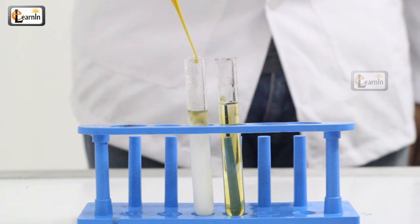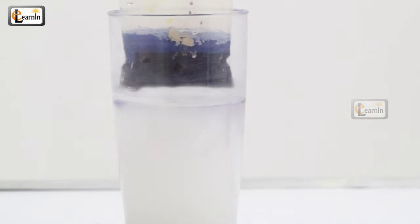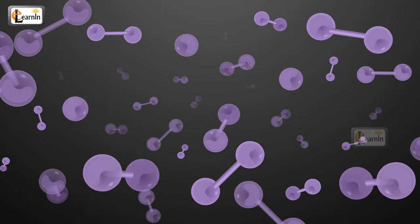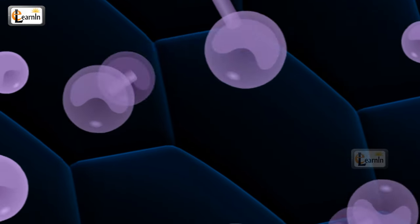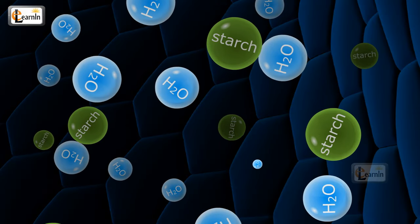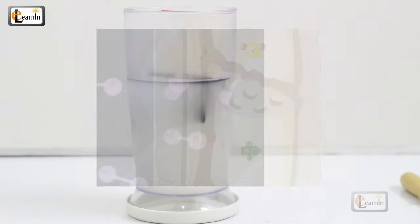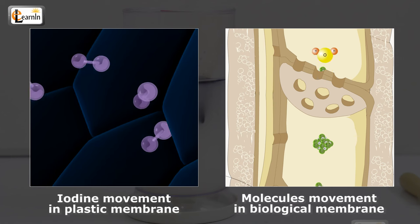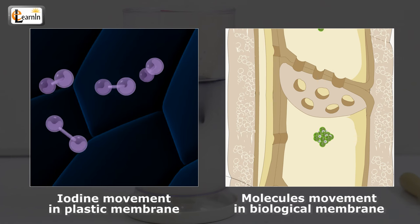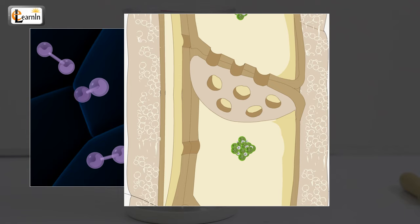Explanation: Iodine is used to test for the presence of starch. When iodine reacts with the starch it turns deep purple-black. The iodine molecules are small enough to pass through the membrane of the plastic bag. However, starch and water molecules are too big to pass through the membrane. The movement of the iodine through the plastic membrane is functionally the same as the movement of molecules through biological membranes, that is any cell membrane.